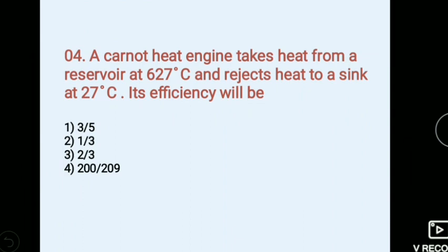A Carnot heat engine takes heat from a reservoir at 627 degree Celsius and rejects heat to a sink at 27 degree Celsius. Its efficiency will be. Options: 1) 3 by 5, 2) 1 by 3, 3) 2 by 3, 4) 200 by 209. Answer 3, 2 by 3.